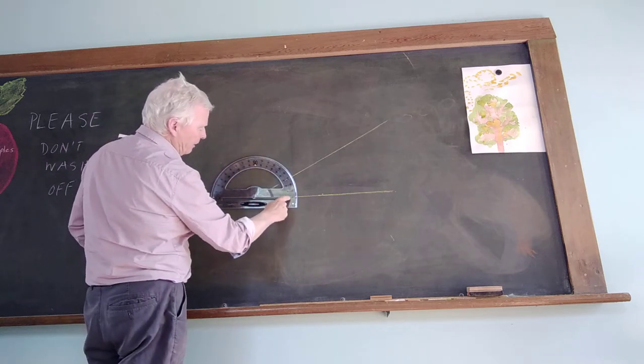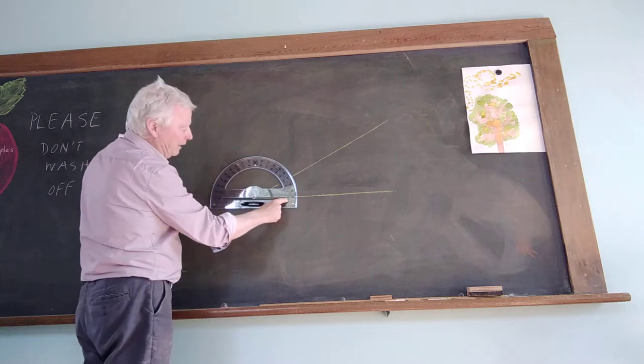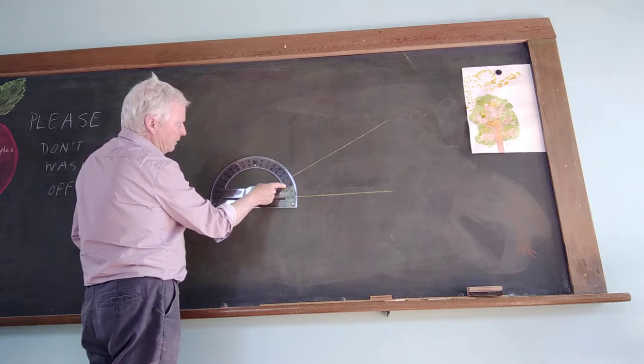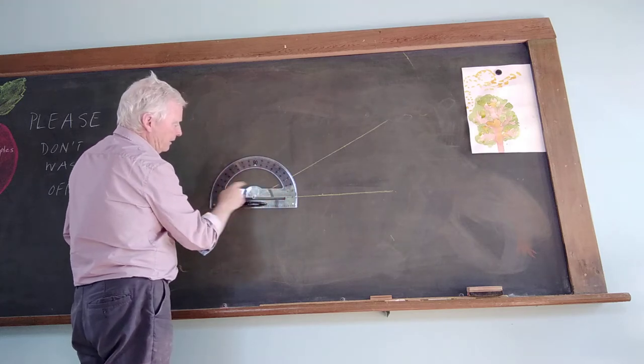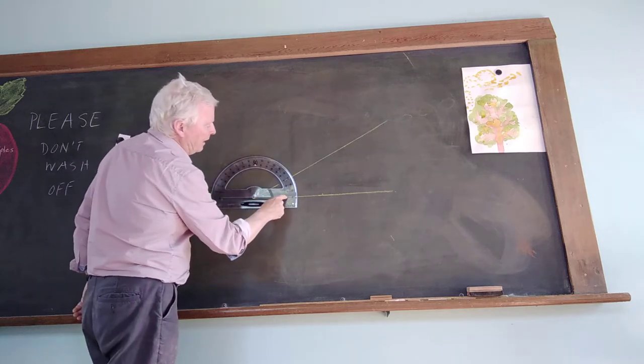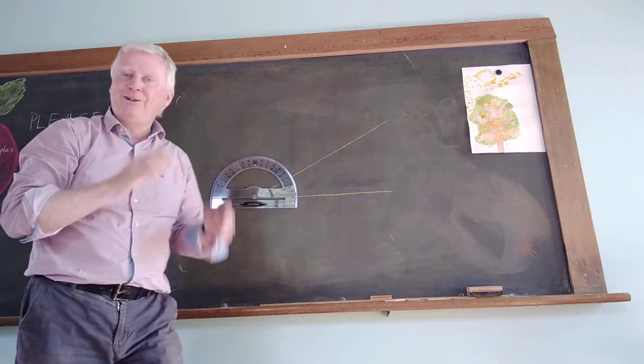So if I'm measuring from here, I don't want to be looking at the 180. I want to be looking at the zero and count this way. I'll go anti-clockwise this way. Counter-clockwise or anti-clockwise, whichever way you want to say it. So that's 10, 20, it's 30. Bingo. I've got 30 degrees.